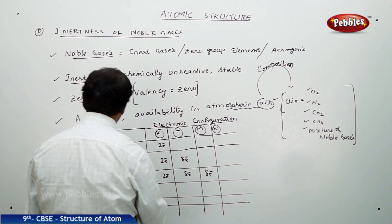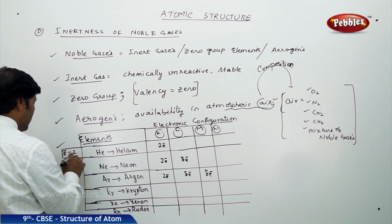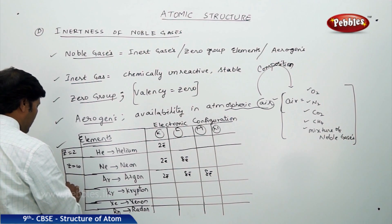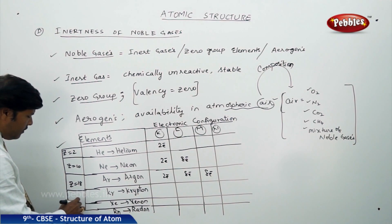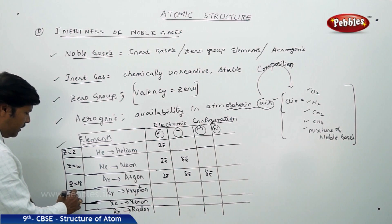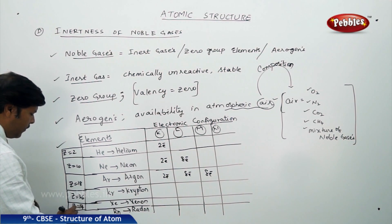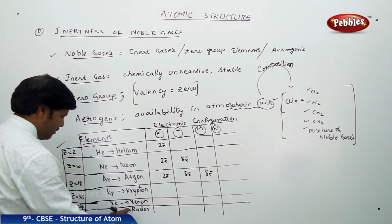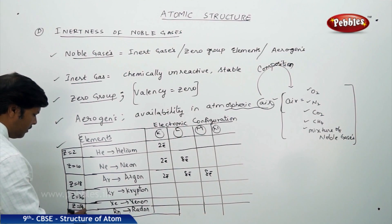The atomic number of helium is 2, neon is 10, argon is 18, krypton is 36, xenon is 54, and radon is 86.